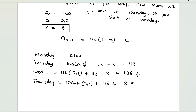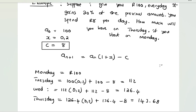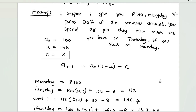Multiplying the previous amount of 126.4 by 20 percent, adding it back, and subtracting 8 gives us 143.68. This is how much you are supposed to have on Thursday.